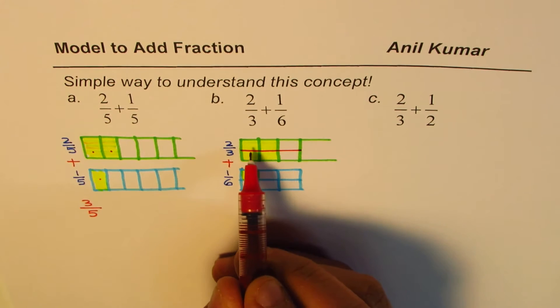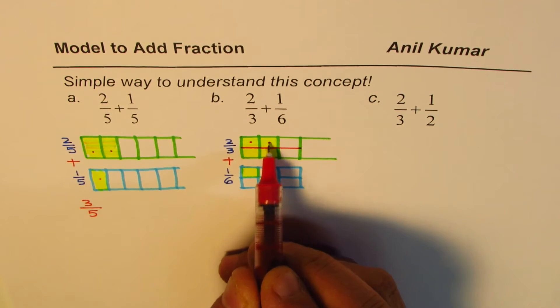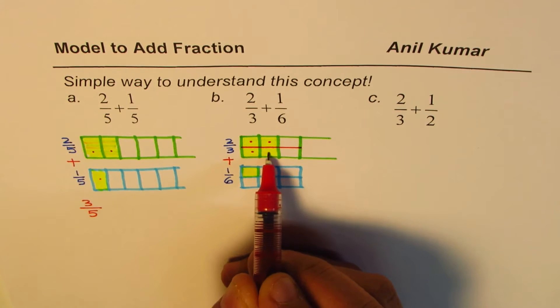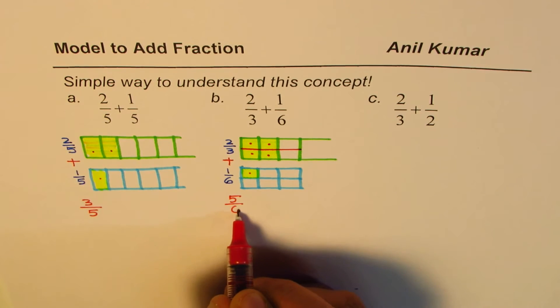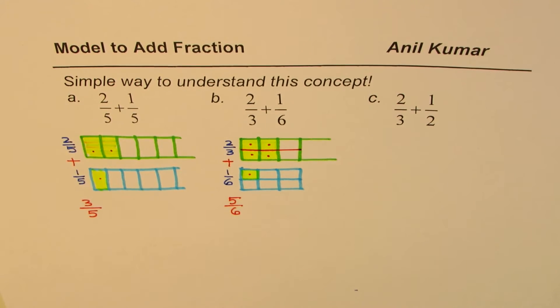Same sizes, right? 1 sixth, 2 sixth, 3 sixth, 4 sixth and 5 sixth. That is 5 out of 6. Do you see that? That is how you add them when the denominators are different.